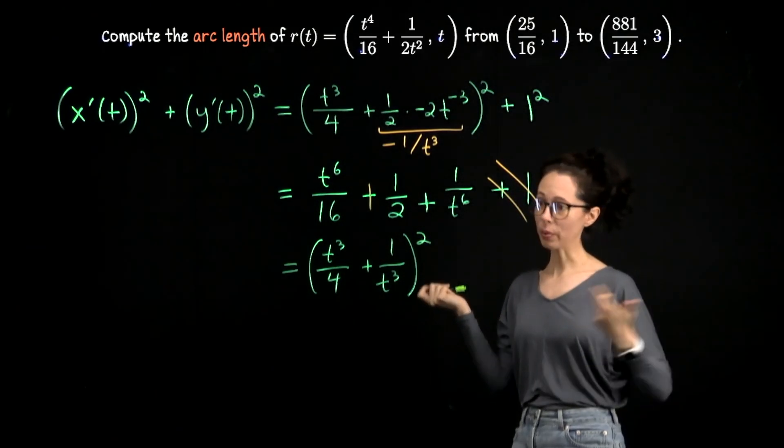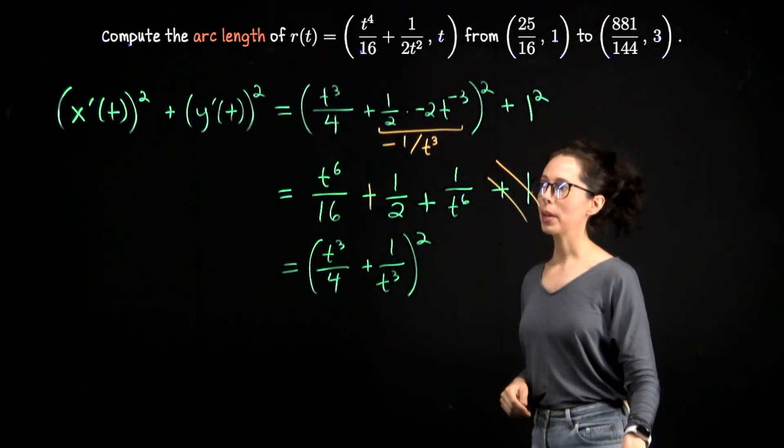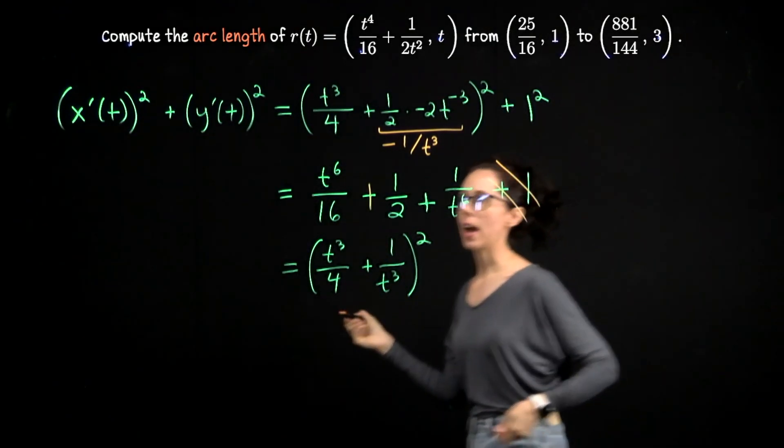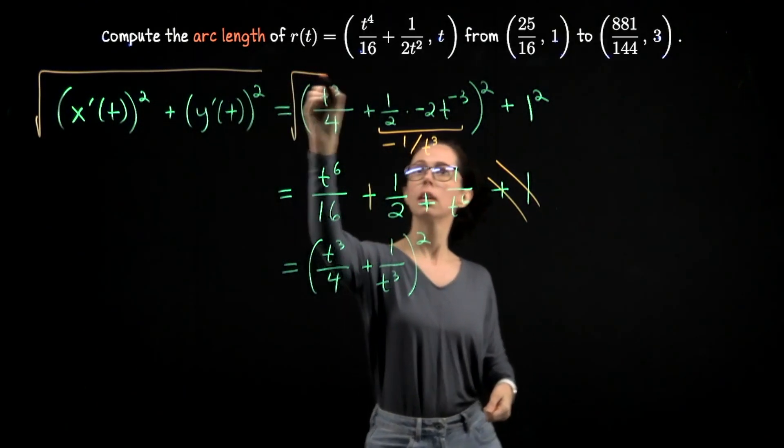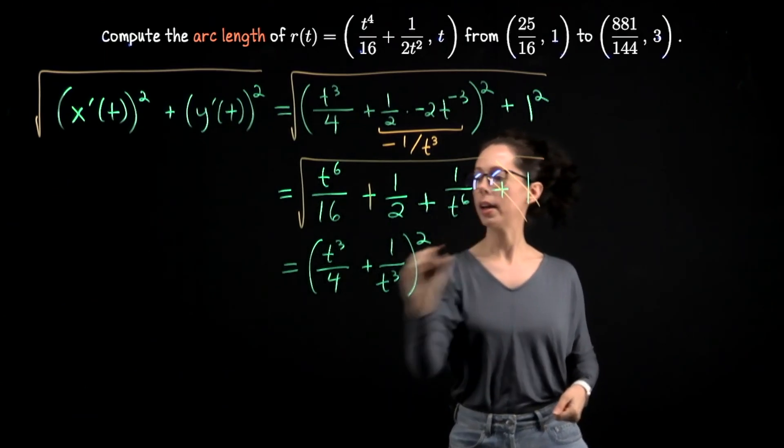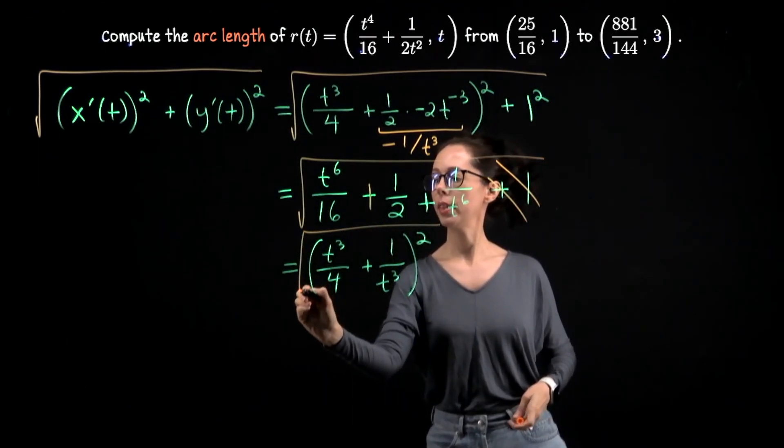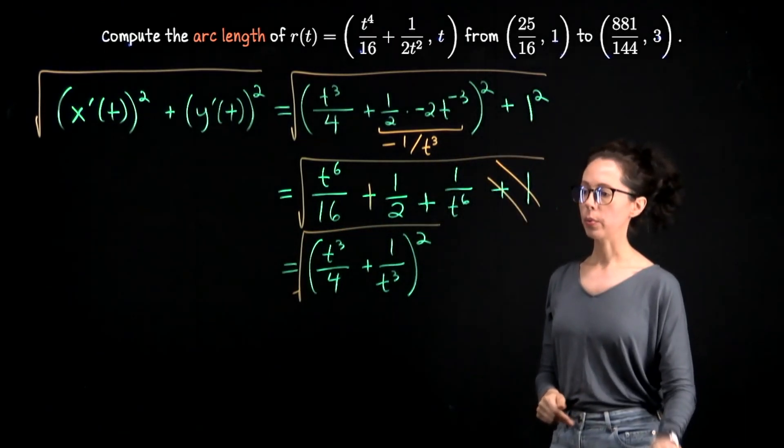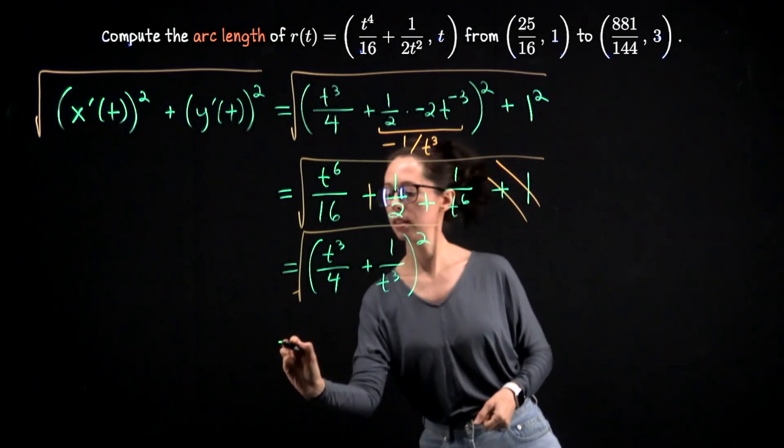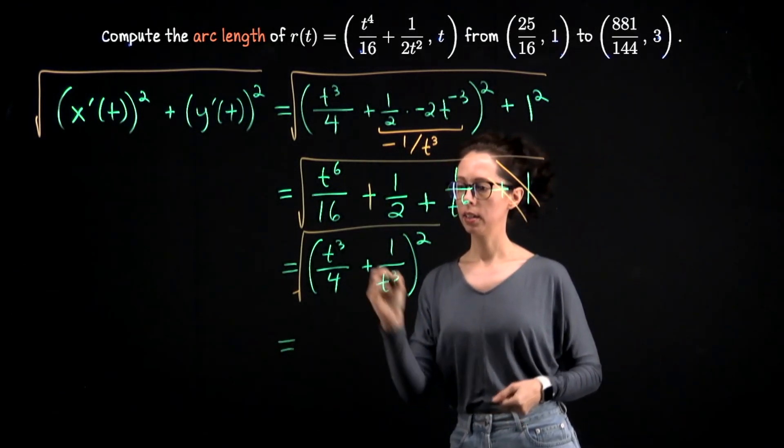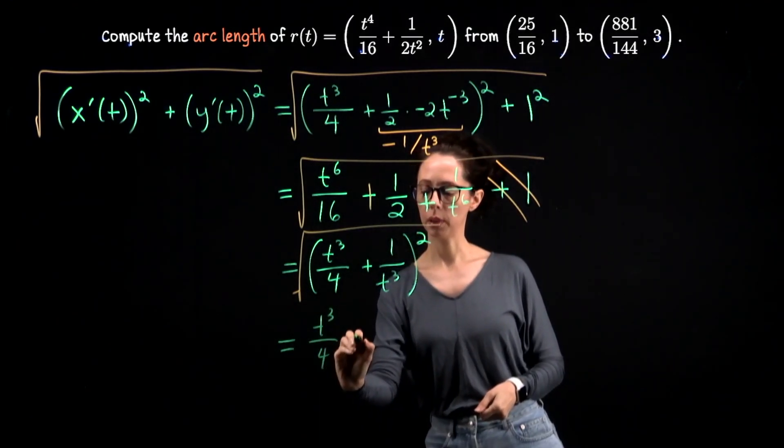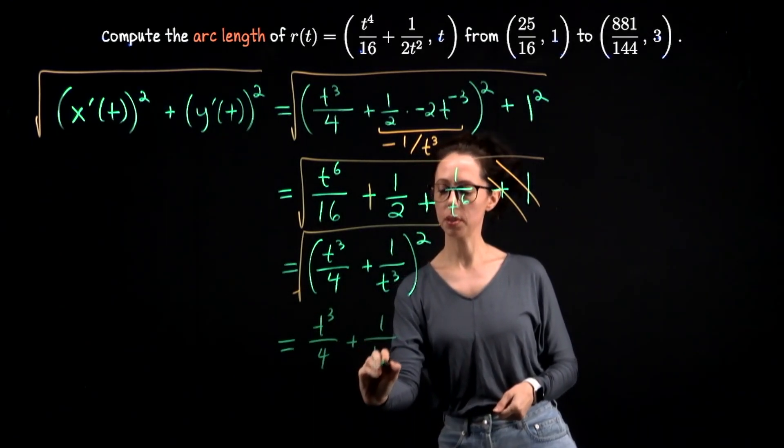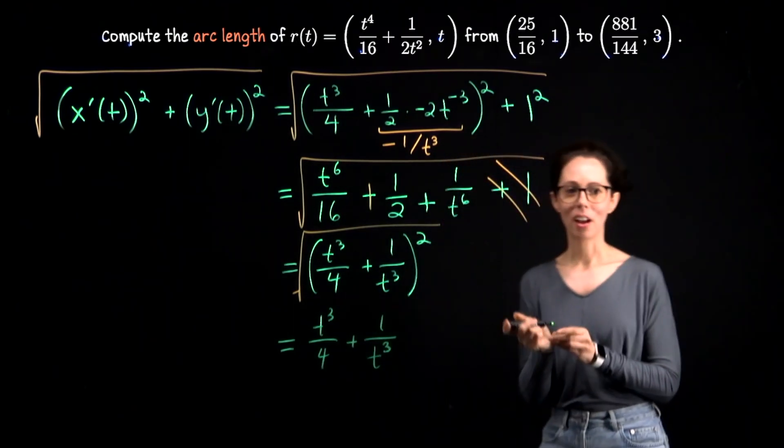And now we're really good to go because we need to take the square root of everything. So let me just add that into this computation. We want the square root of this. So we'll take the square root of that, square root of that, square root of this, so that we now have an integrand that's going to look like just t cubed over four plus one over t cubed.